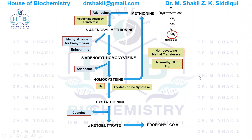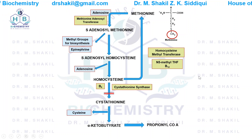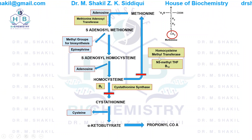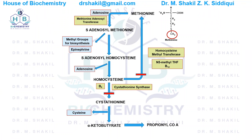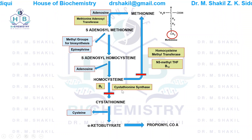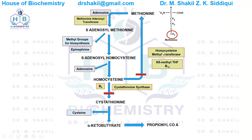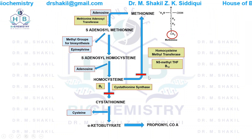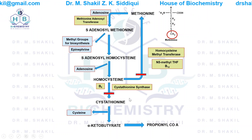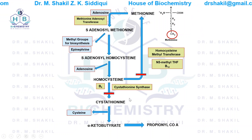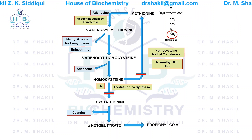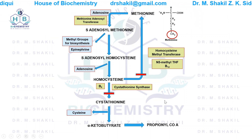When either of the two enzymes — cystathionine synthase or homocysteine methyltransferase — is not working, homocysteine will start to accumulate in the cells. It will then be dumped into the blood and then into the urine. When homocysteine appears in the urine, the condition is known as homocystinuria.